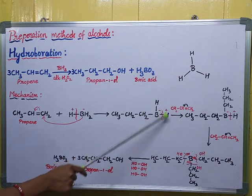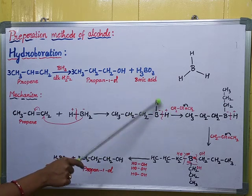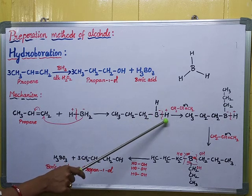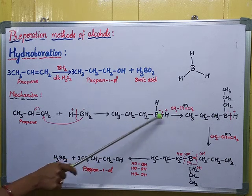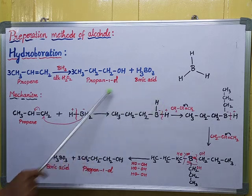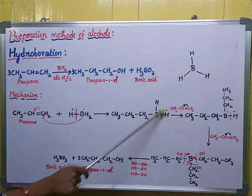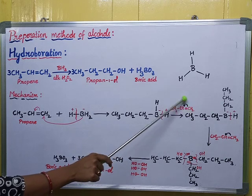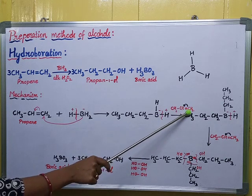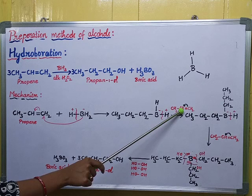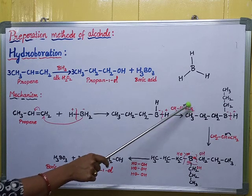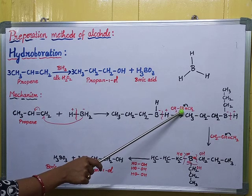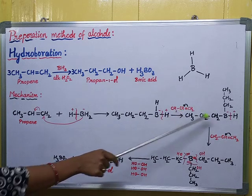Next, the boron now has two hydrogens and one alkyl group. Again, I give the cleavage — this hydrogen becomes positive and the remaining part becomes negatively charged. This negatively charged part attacks on the next carbon. Shifting the double bond again, one carbon gets negative charge and the other gets positive charge. This carbon attacks with boron, and the hydrogen goes and attacks the other carbon.